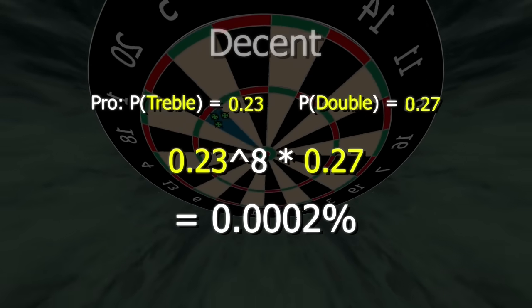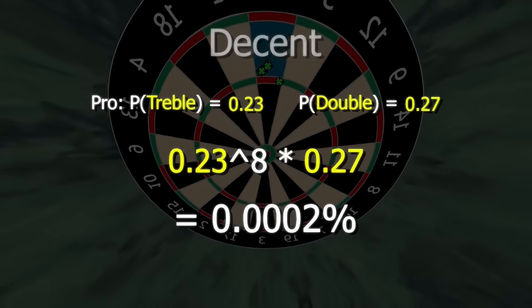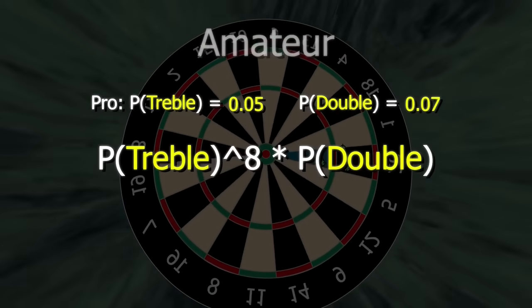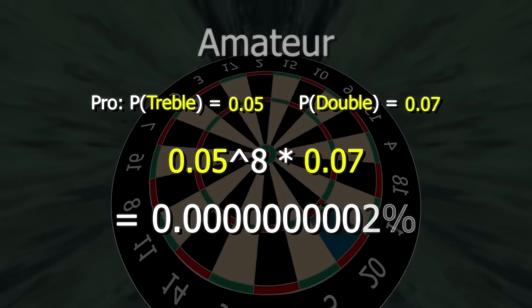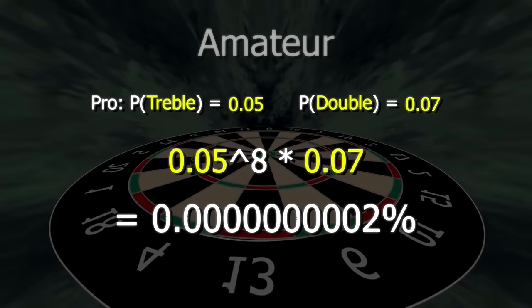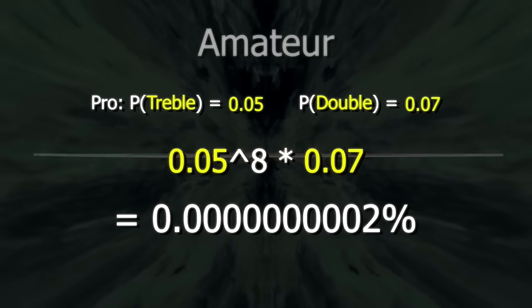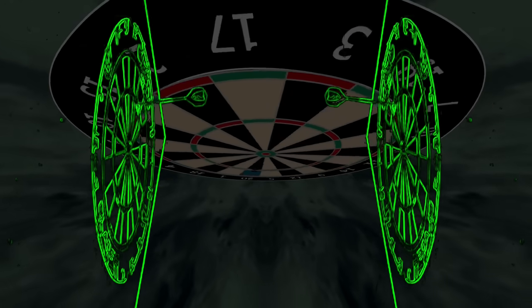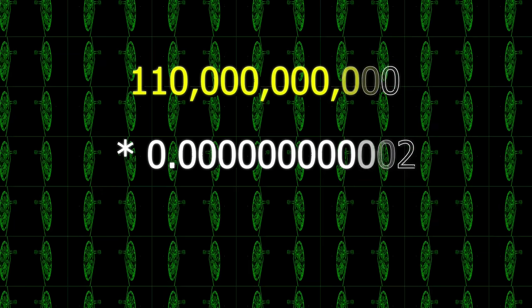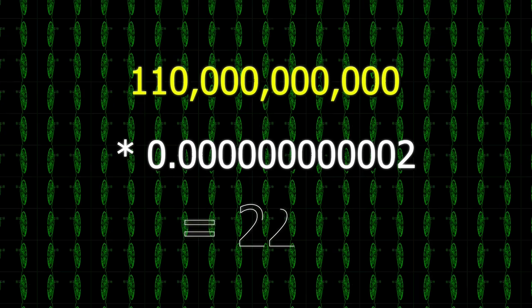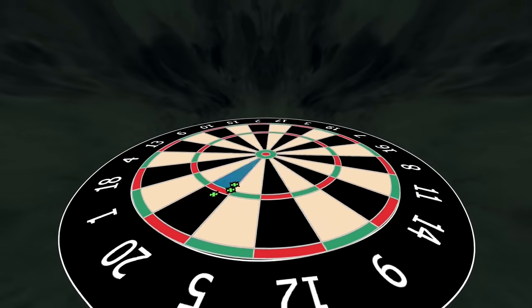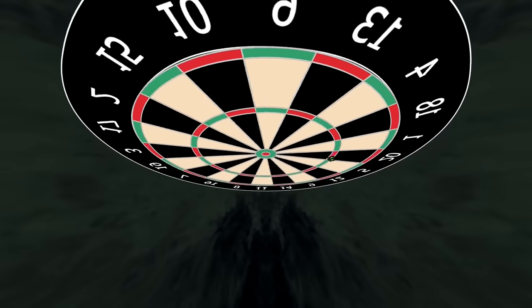And this just gets ridiculous when you get to the amateur player. So 0.05 to the power of eight times 0.07 gives you 0.00000002%. That's nine zeros. So that's one in 500 billion. If we got every single human who's ever lived to have a go, about 110 billion of us, assuming they all throw with about a 40 average, you would still only have about a 20% chance that any one of them manages to hit a nine dart. And at one leg a minute, it would take 1 million years of constant throwing for you to hit one. That's 11,980 lifetimes.